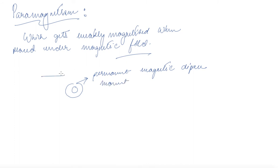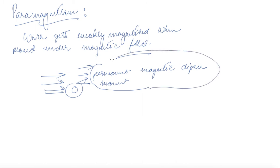In the case of an external magnetic field, the molecules or elements of the substance align themselves in the direction of the magnetic field. Because they align in the direction of the magnetic field, they become magnetized. If you remove the external magnetic field, paramagnetic substances can still attract certain other magnetic materials for some time.